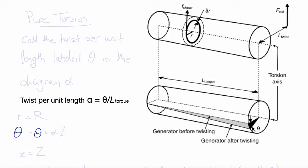This next example of pure torsion is most easily done in cylindrical polar coordinates. Imagine we have a cylindrical bar, or it could be a tube, with constant radius and length shown here as L_torque. We subject it to some torque or twisting moment with a moment arm of L_twist and a force F external. The result is that, holding one end fixed, the other end twists or rotates through theta degrees.